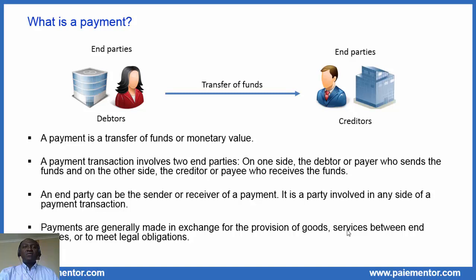When both have bank accounts, the debtor's account is debited while the creditor's account is credited. Payments are generally made in exchange for the provision of goods and services between end parties. Payments are also made to meet legal obligations — for example, when you pay your taxes. As we can see, an end party can be the sender or receiver of a payment; it is a party involved in any side of a payment transaction. End parties can be persons or businesses.